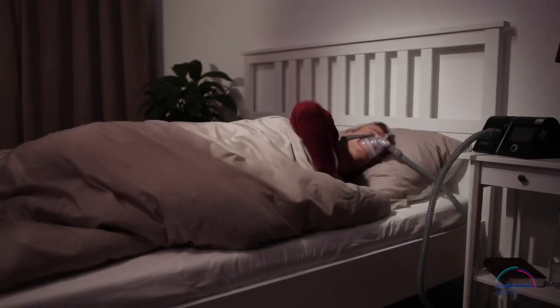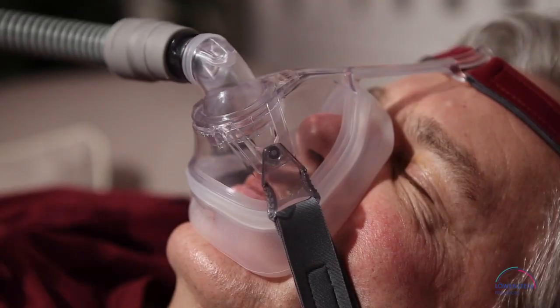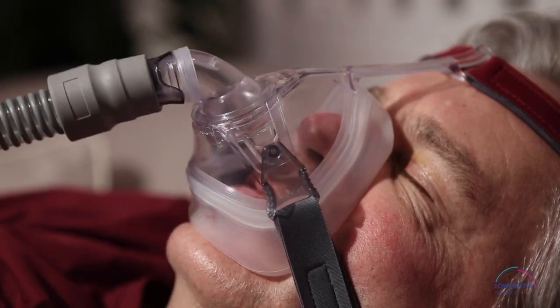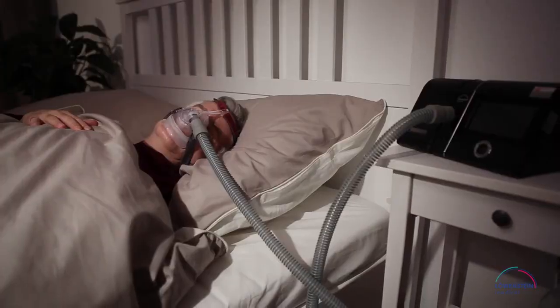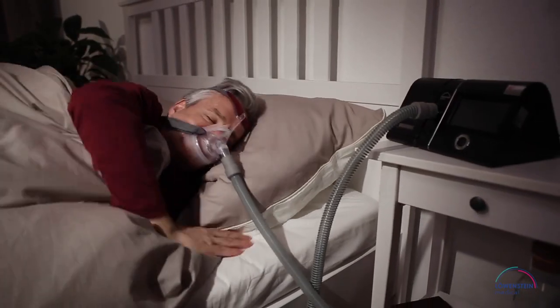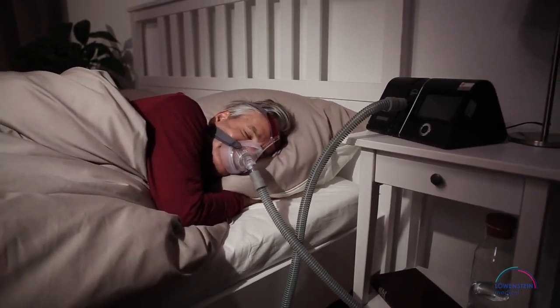You naturally move around while you sleep. Your mask is equipped with a ball and socket joint to ensure that it fits your face snugly and securely. Because the joint can rotate 360 degrees and swivel in all directions, the mask cannot slip out of place.